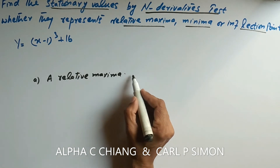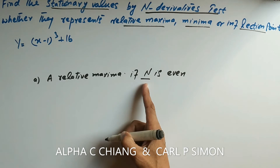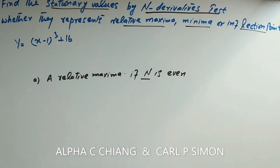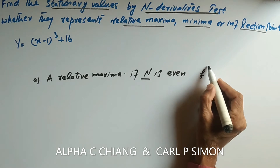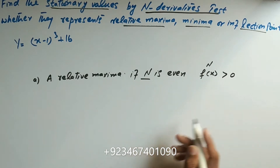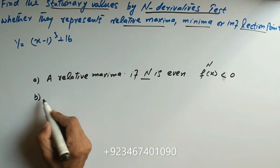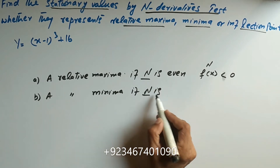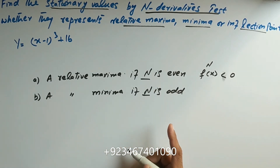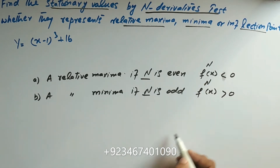For relative maxima, if n is even — meaning the number of the derivative is even, like 2, 4, or 6 — and the answer is non-zero, then we have a relative maximum if f^(n)(x) is less than zero. The second condition is relative minimum: if n is odd, like the 3rd, 5th, or 7th derivative, and the nth derivative is greater than zero, then it is a relative minimum.